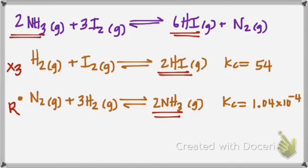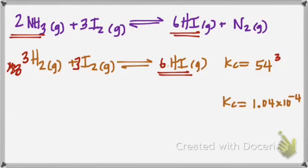So, the first part, I'm going to have my 3H2 and then my 3I2. And instead of having my 2HI, now I'm going to have 6. And because I multiplied the entire equation by 3, then that means I'm going to have to cube that value. And we're going to have to reverse the other one, the second equation. So I'm going to go ahead and I'm going to do that.